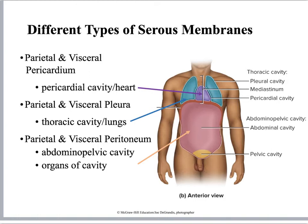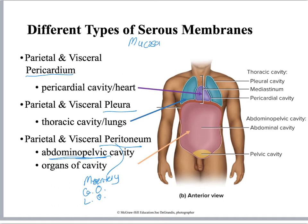In the ventral body cavity we change the name of the serosa depending on location: pericardium around the heart, pleura around the lung, and peritoneum in the abdominal pelvic cavity. The peritoneum has specialized types including mesentery, greater omentum, and lesser omentum, which we'll get into later. Lining tubes — such as blood vessels, lymphatic vessels, and the inside of the intestines — are mucosa. Know the difference between the two, as we'll be focusing on both in this lab.